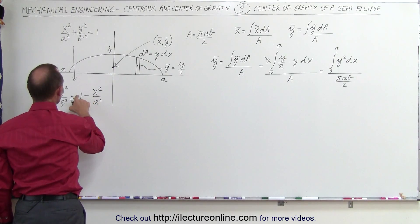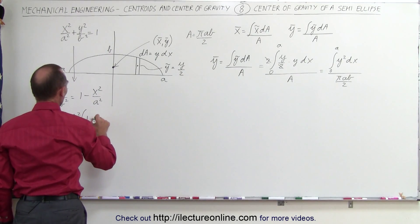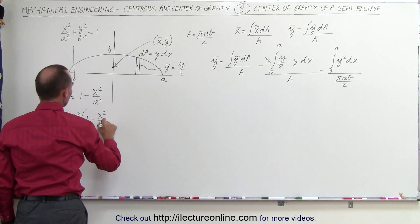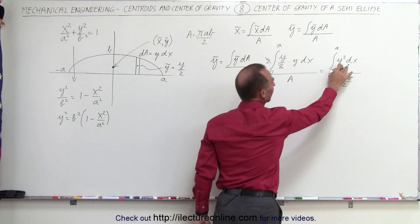And finally, multiplying this through by b², we get y² is equal to b² times the quantity 1 minus x² over a². And that can then be substituted in for y² in our integral.